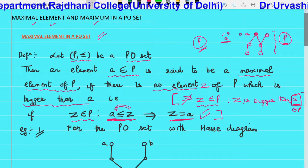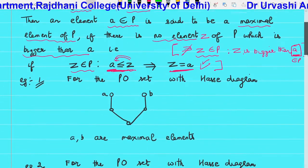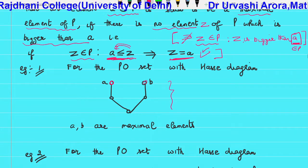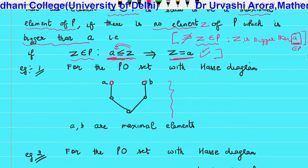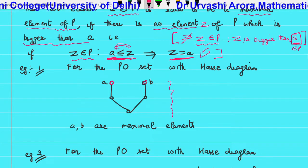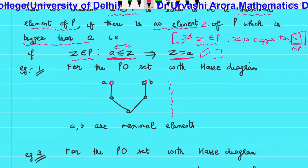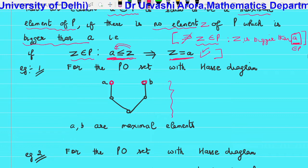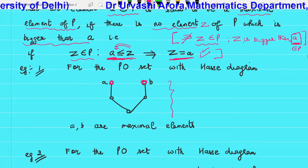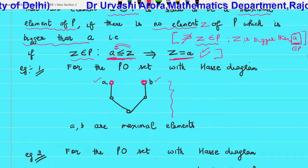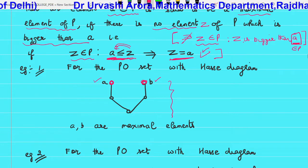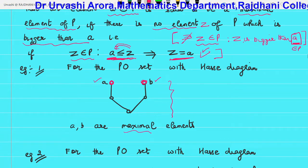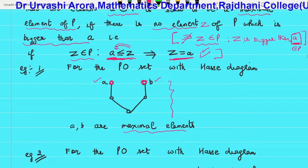Looking at Example 1: this PO set has two elements A and B such that there is no element lying above them — no element at the top of A, no element at the top of B. This means there is no element bigger than A and no element bigger than B. So these two elements lying at the top are the maximal elements. There are two maximal elements in this PO set, establishing that a PO set can have more than one maximal element.